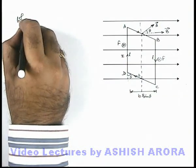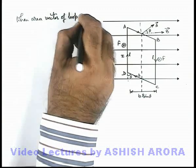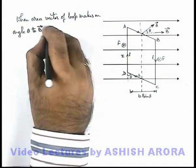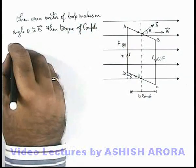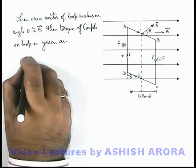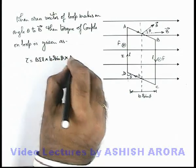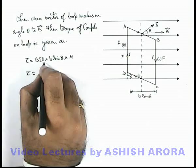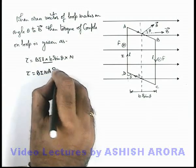So we can write: when the area vector of this current carrying coil makes an angle theta with the direction of magnetic induction, the torque of the couple of these two forces on the loop is given as BiL multiplied by the separation b sinθ, also multiplied by N, the number of turns. Since l × b is the area of the coil, the torque can be written as tau = BiNA sinθ.